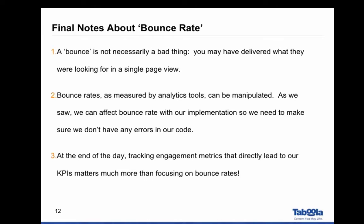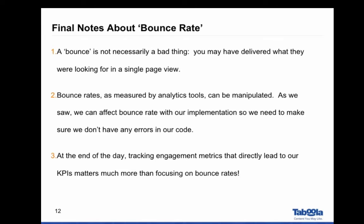Bounce rate is the absence of engagement — a very straightforward, binary metric. Either there was one interaction or there were more. The inverse of that is engagement: people doing more than one thing on your website, or really just doing anything on your website once they come. There are a number of different metrics we can use here. The six I've chosen are: time on site, pages per session, sessions per user, anything around a conversion funnel, anything around video or gallery consumption, and then a recap of custom events we can set up.